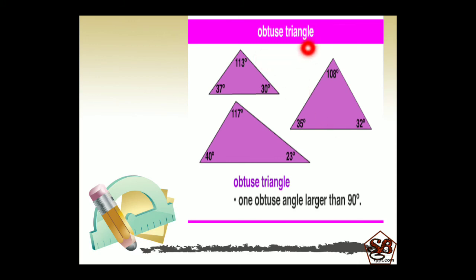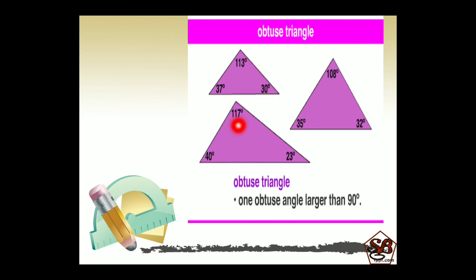The third one is obtuse triangle. In an obtuse triangle, one obtuse angle is larger than 90 degrees but less than 180 degrees. A triangle can have only one obtuse angle — only one angle greater than 90 degrees — and the other two angles will be less than 90 degrees. For example: 35, 32 and 108 — this is greater than 90 degrees; 113, 37 and 30 — this is greater than 90 degrees; 40, 117 and 23 — this is greater than 90 degrees. Such types of triangles are called obtuse triangles or obtuse angled triangles.